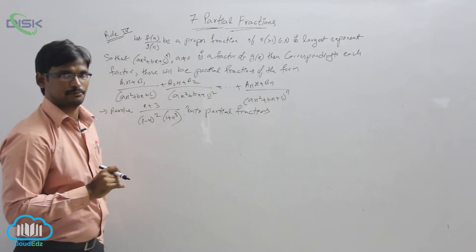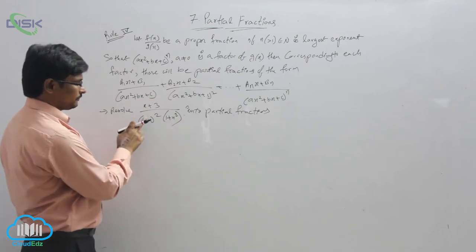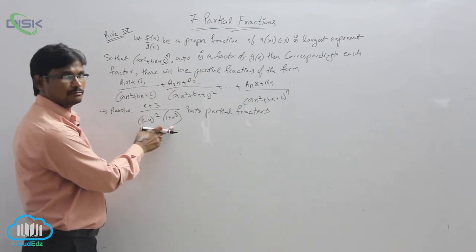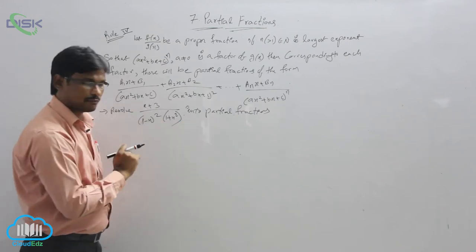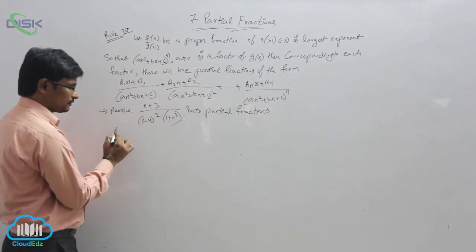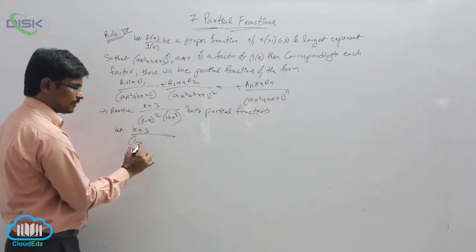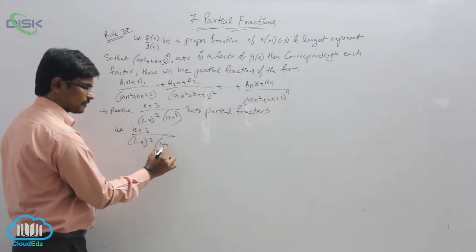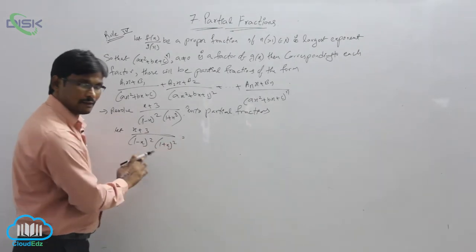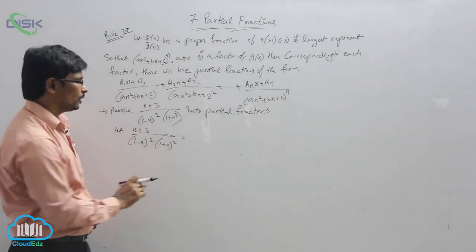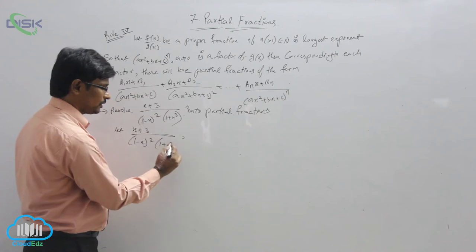How to do the method? Now see, they gave one problem and we had to convert into partial fractions. Now as usual like previous methods, we need to consider LHS equal to, here we have in the denominators two parts, two terms are there.